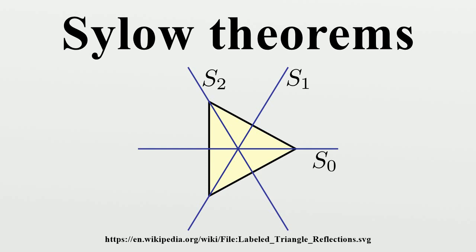Example 3: If the order equals 60 and G has more than one Sylow 5 subgroup, then G is simple.